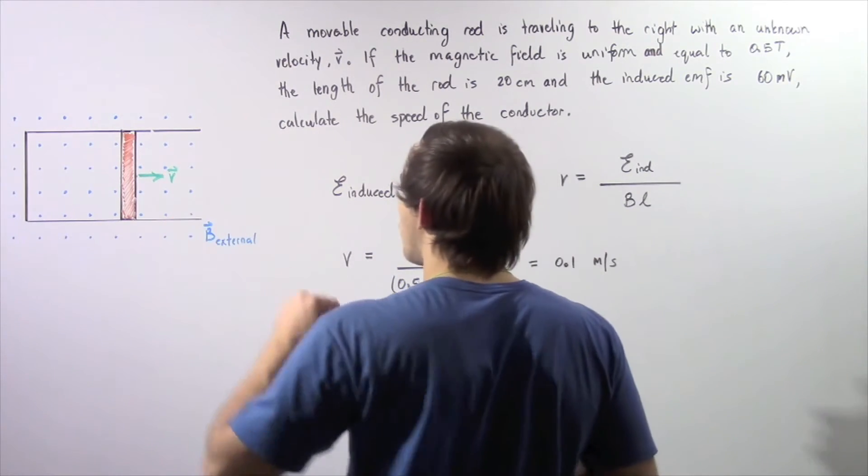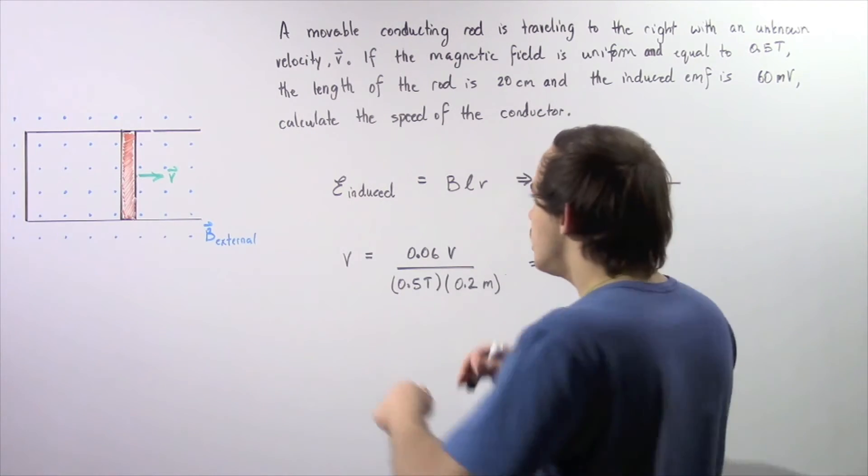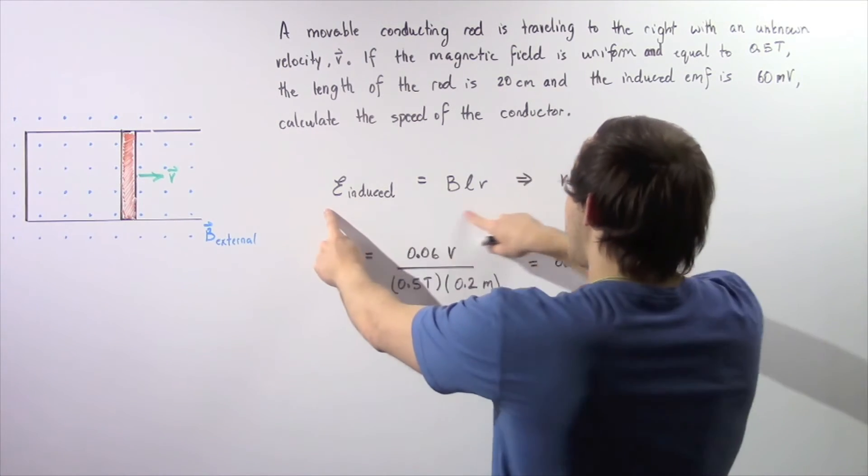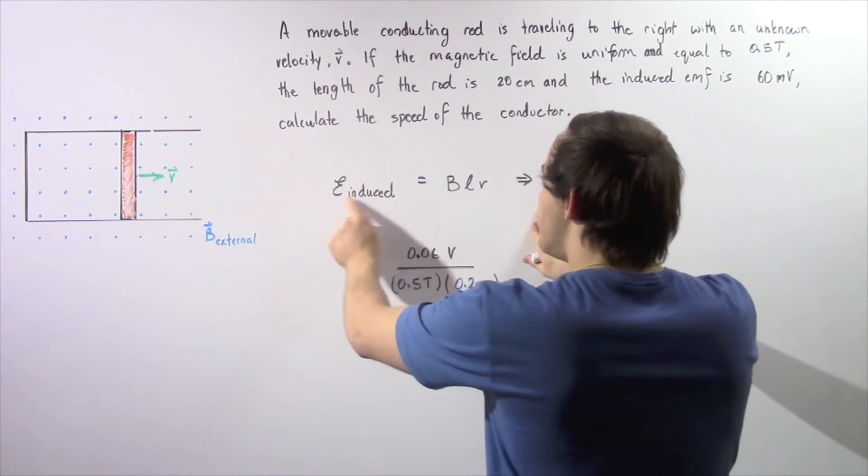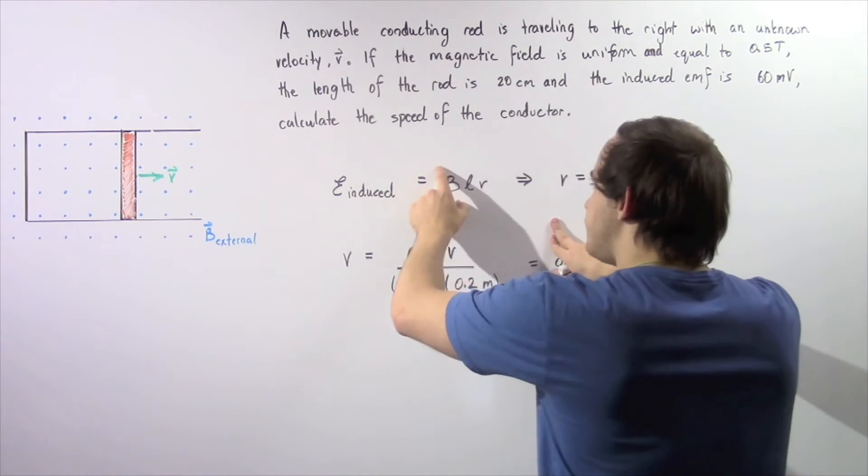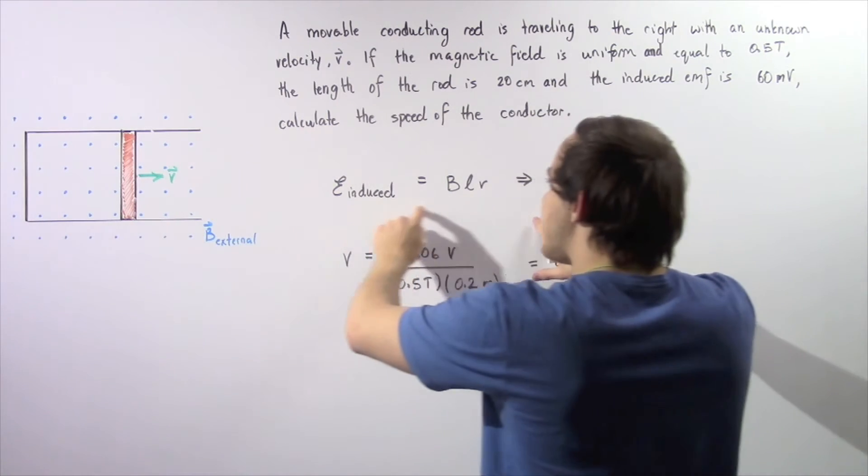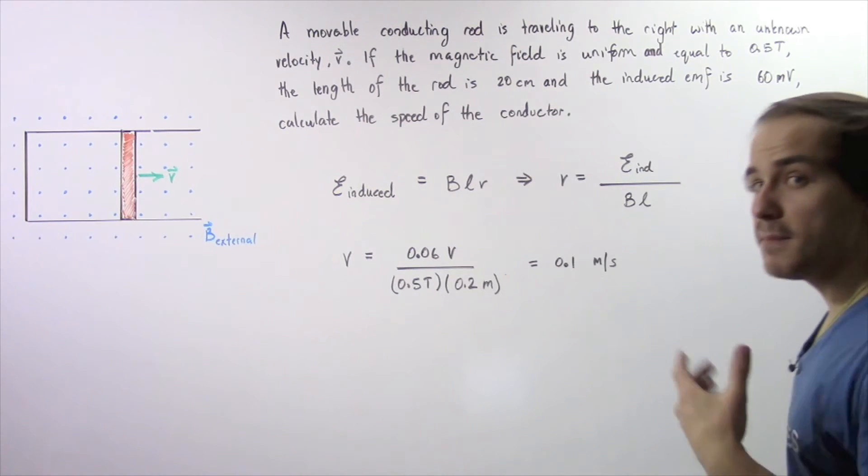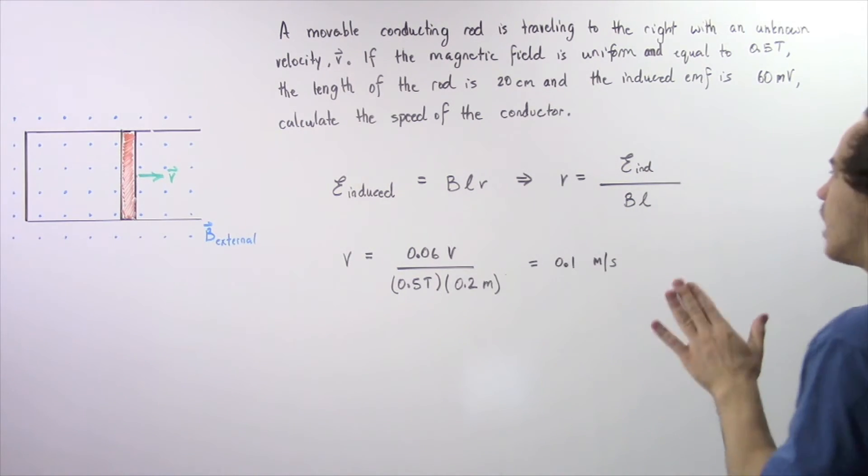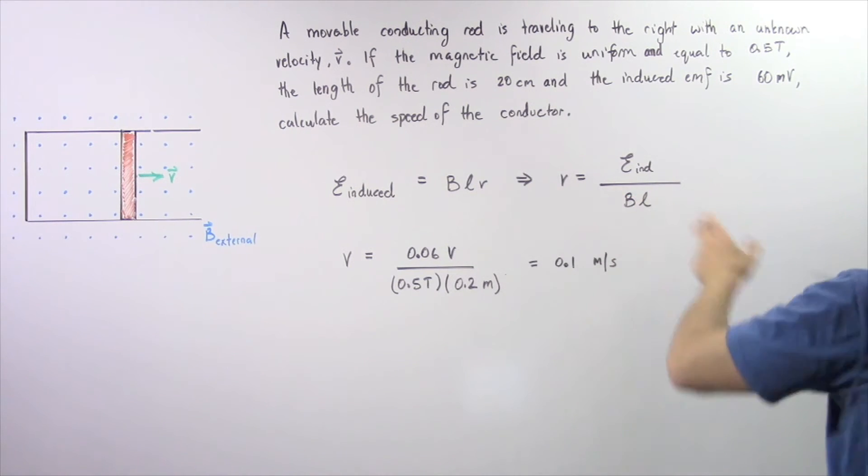To calculate the magnitude of our velocity, we simply apply the equation that we derived in the previous lecture. The induced EMF is equal to the product of the magnetic field B, our length L, and the velocity V. We take this equation, solve it for V, and we see that the velocity, or the magnitude of velocity of our moving conductor, is equal to the induced EMF divided by the product of the magnetic field B and the length L.